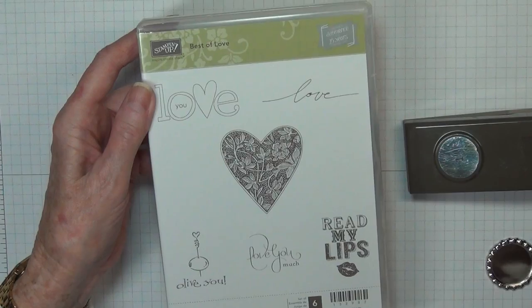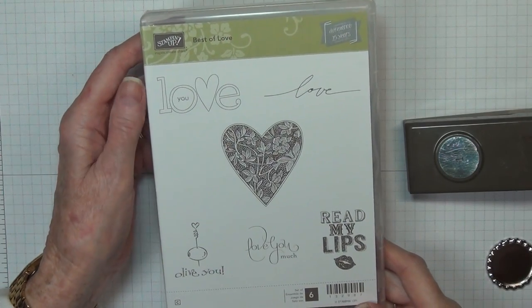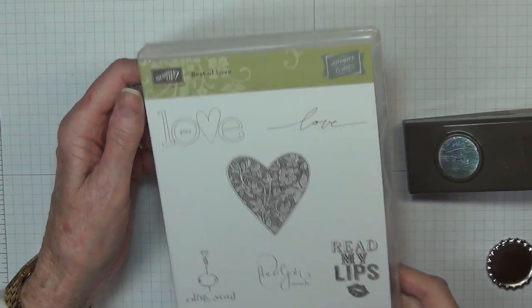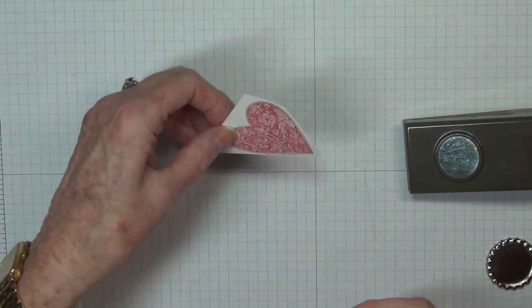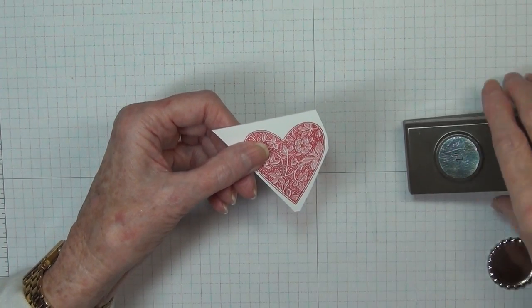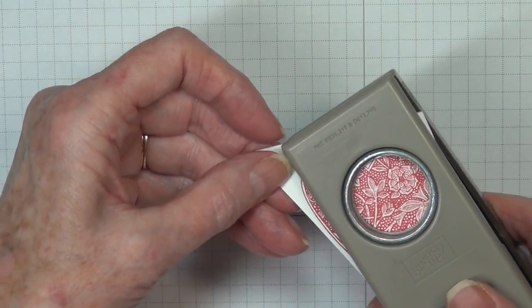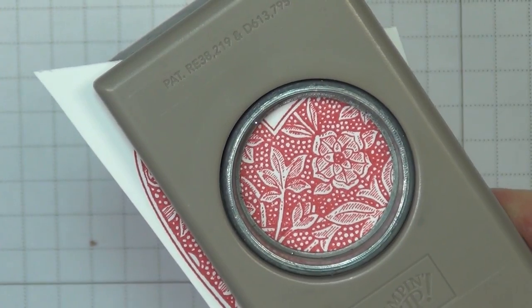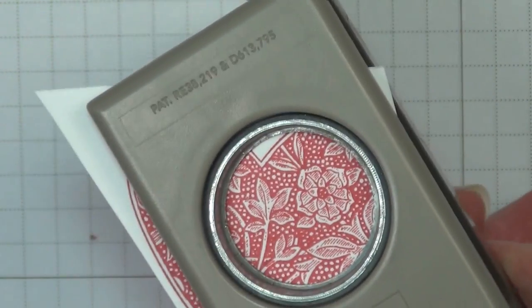This stamp set is Best of Love and this is the heart that I have used. I've stamped it in real red on Whisper White, trimmed around the one side so that I slide my one inch circle punch into the V on that heart. You can see where at the top I've trimmed out of that heart ever so slightly.